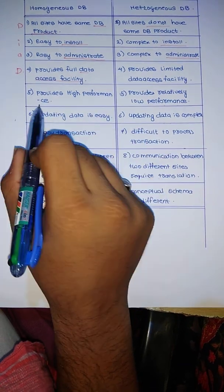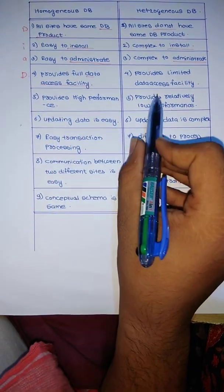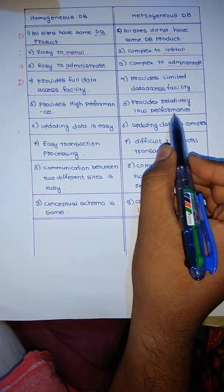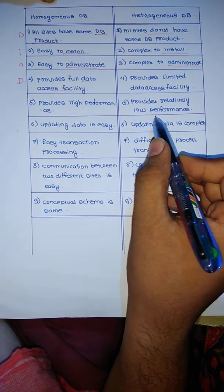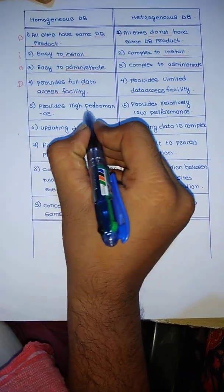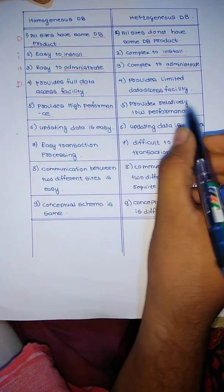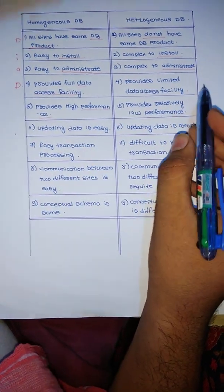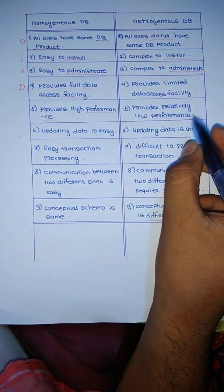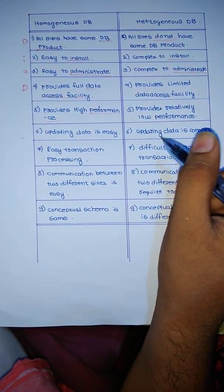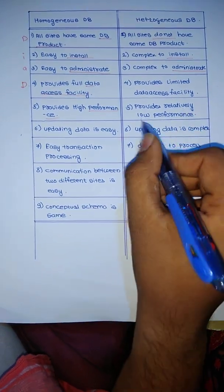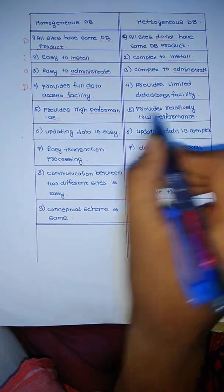Fifth, a homogeneous database provides high performance, while a heterogeneous database provides relatively low performance. In a homogeneous database, performance is quite high. In a heterogeneous database, synchronization and translation between databases are also needed, so performance is relatively low. The keyword is performance — P.